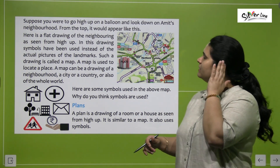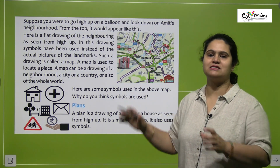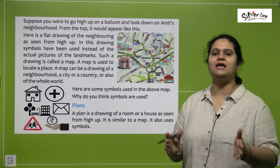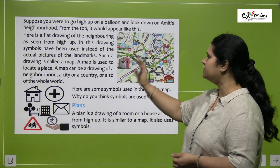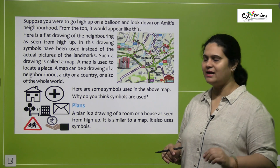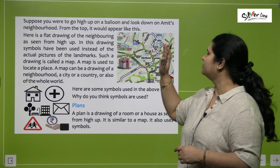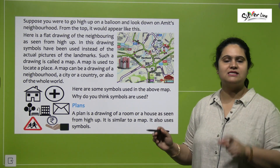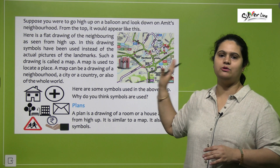Isi ko hi map kaha jata hai. In this flat drawing, symbols have been used instead of using actual pictures of the landmarks — landmarks hain, parks hain, hospitals hain, post office hain. Hum ne unki actual pictures ko use karne ki jagah, we have used these symbols for them. Such a drawing where symbols are used in place of the actual pictures is known as a map. A map is used to locate a place — agar aapko koi cheez dhoonni hai, koi jagah dhoonni hai, then you will refer to this map, dekh kar ki woh kaunsi road kaunsi jagah connect kar rahi hai. You can now see the names of the roads, and aap us jagah tak easily pahunch sakti hain by looking at this map.